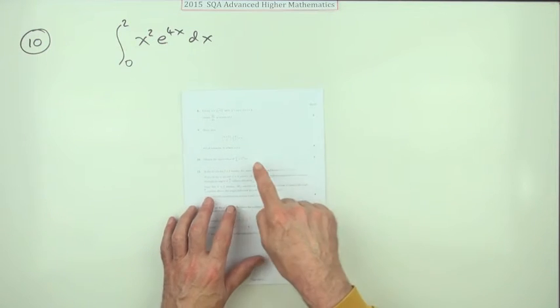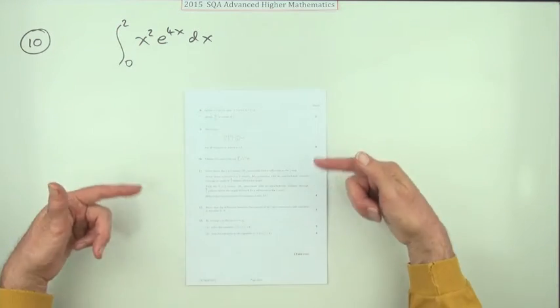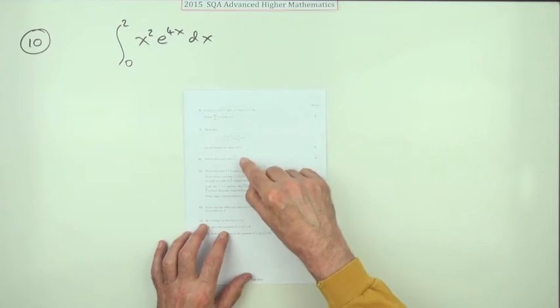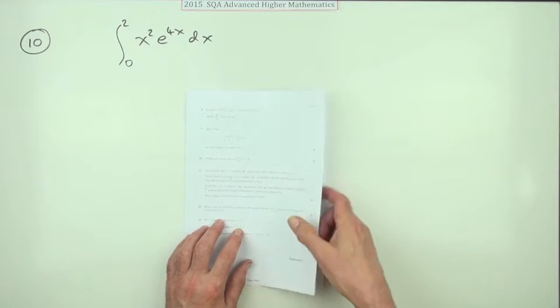Should be fairly straightforward apart from two things. You notice it's got an x squared which means you'll be going through it twice, and it's actually got limits in it. It's a definite integral, you'll find the exact value.